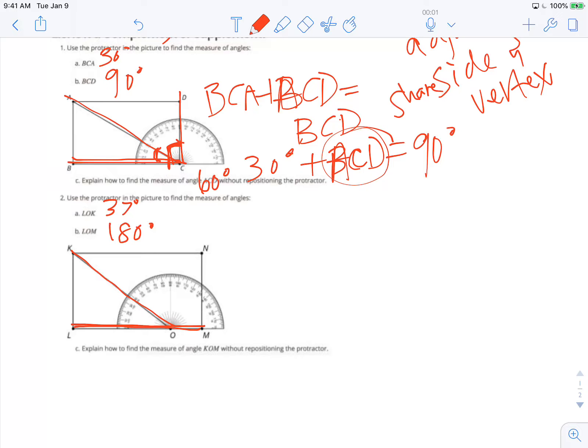Now, it says, explain how to find the measure of angle KOM, which is this one. So, this opening right here, which is an obtuse angle, without repositioning the protractor. So, again, I can consider what I know in this situation. I know that the measure of LOK and the measure of KOM combine together to make LOM, which is a straight angle.